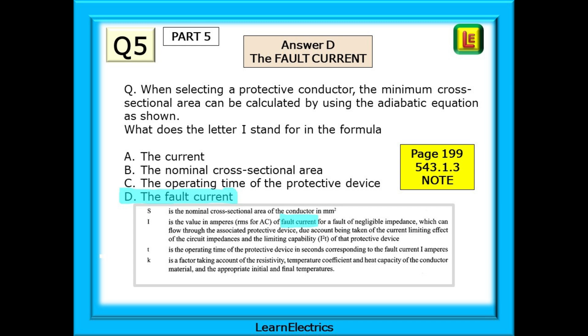On page 199 find regulation 543.1.3 and look at the note below the formula. There is our answer, the fault current. Just the word current on its own is wrong because that is not the exact wording used for this formula. Be aware of the need for matching what the question is asking and choose answer D.